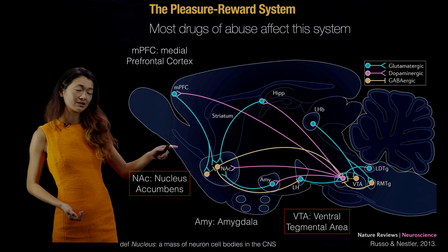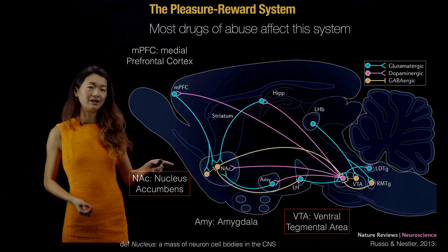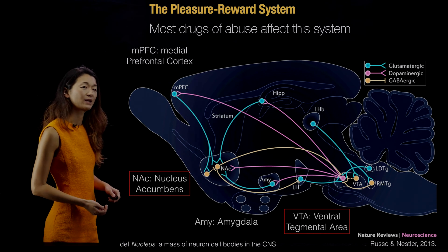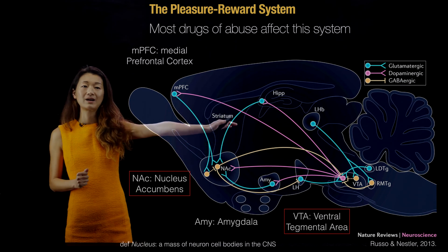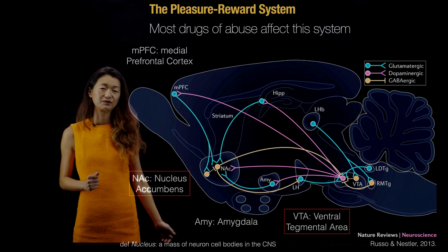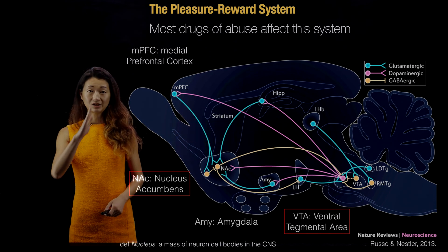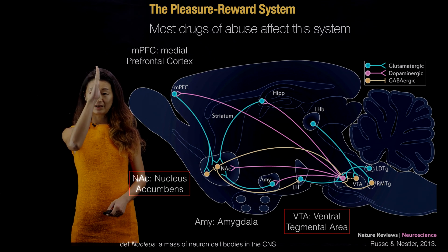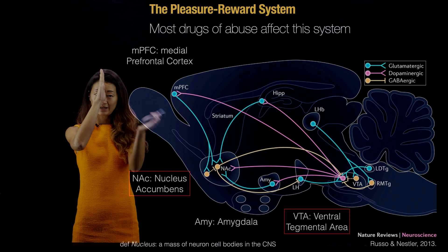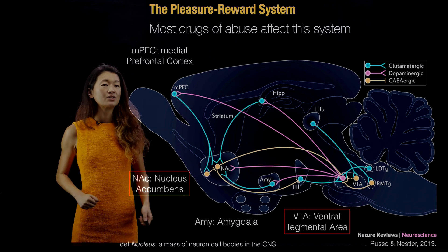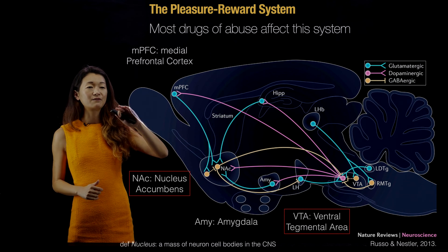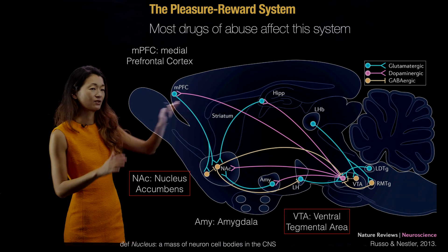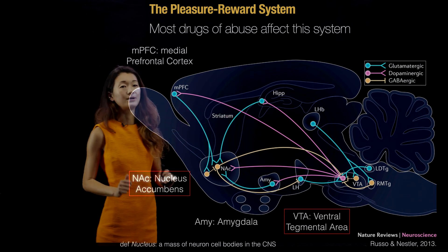The pleasure reward system is a really powerful one in your brain. Here's a picture of what's called a sagittal section — in this particular case it's a rat brain, but there's a very similar version for a human brain. A sagittal section is basically a side view where you're cutting the head in half, seeing the left and right half of the brain separately. In this sagittal view of the rat brain, the left is the front, the right is the back, and the spine goes back that way.